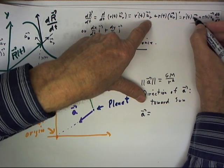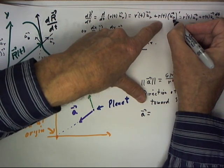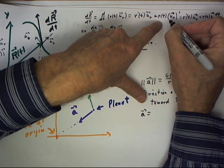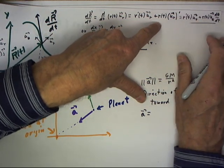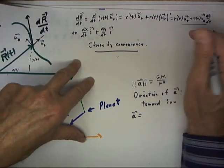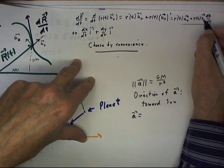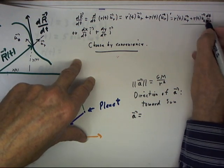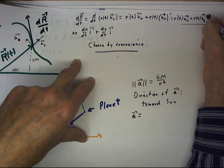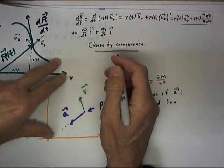Now, r prime of t u r is just written this way. And u sub r prime is equal to what? u sub theta times d theta dt as we've recently seen. So, that our derivative is going to look like this. Now, in a minute we're going to want to worry about what the second derivative looks like. But right now, here's our derivative. And this is a theta here.